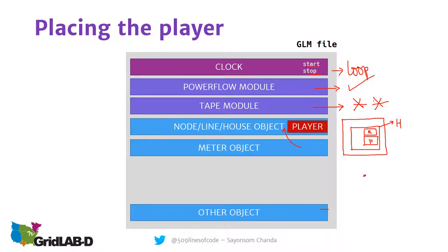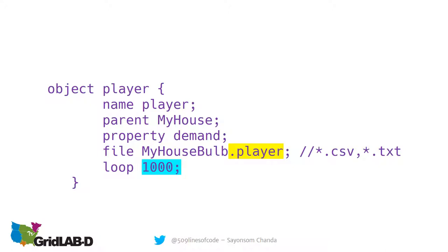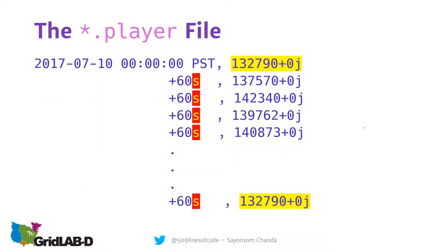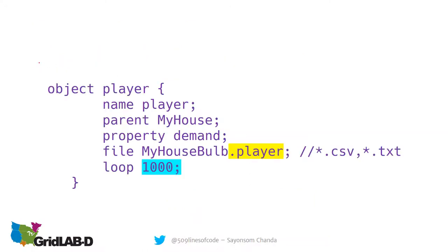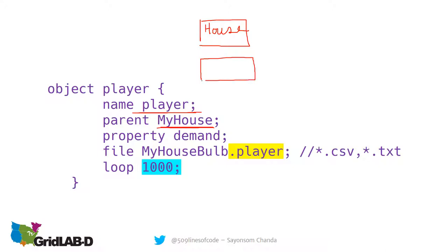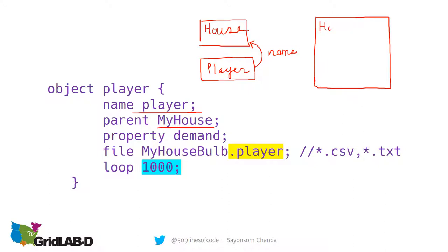Players can be placed inside the house object, and we can have recorders after that. We can also have players outside of them — that's another way. This is essentially how an object player typically looks. A player has a name, which is very important. That name is how it interacts with other objects inside the GridLabD model — it is how things are referenced with one another. However, if they are nested, the name is not required, as it will be implied that the player is acting on the house itself.